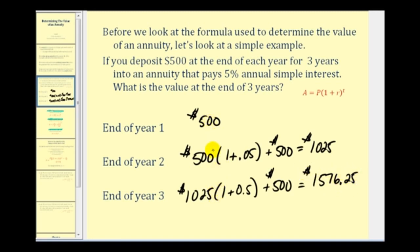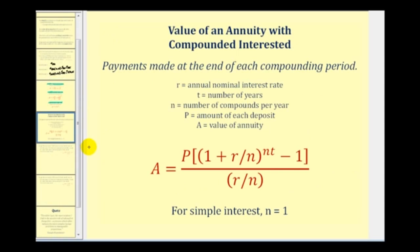So from this example you can see the pattern that is developing, however if we were compounding interest monthly with monthly deposits, you can see this method would be very time consuming. So there is a formula that we can use to determine the value of an annuity, based upon the number of compounds per year, and the number of deposits per year. And here it is.